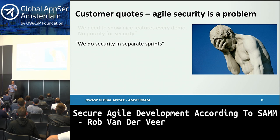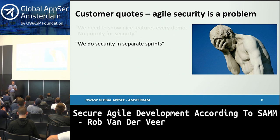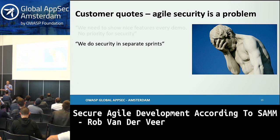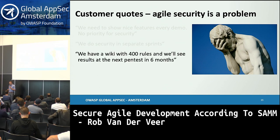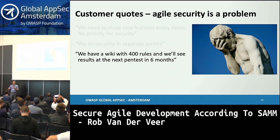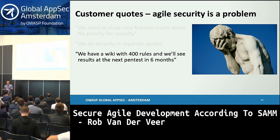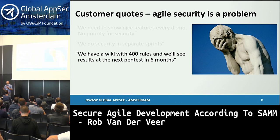'We do security in separate sprints because we cannot fit security in every sprint.' I understand why this comes into existence, but you can only do this for some verification — you cannot skip building in security to some other sprint because you'll be doing a lot of rework. You need to find a way to include building in security in every sprint. Next: 'We have a wiki with 400 rules and we'll see results at the next pen test in six months.' This happens a lot — people collect all the coding guidelines and ASVS rules, but people simply cannot remember and apply 400 rules all the time. It just doesn't work.